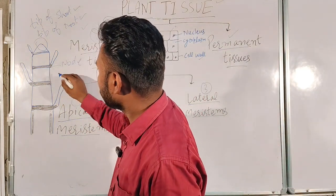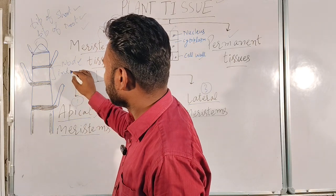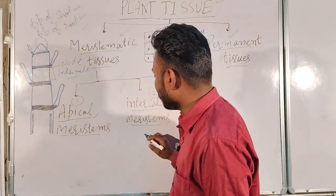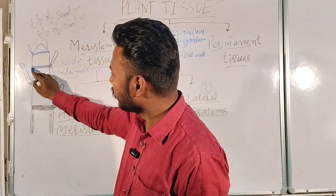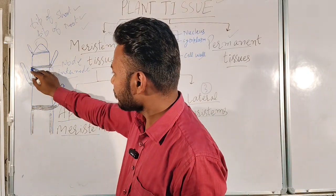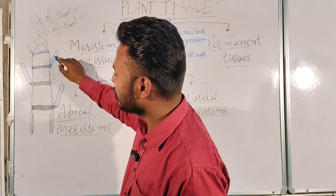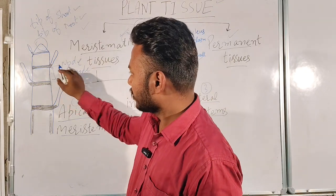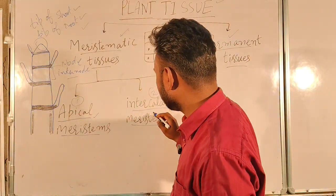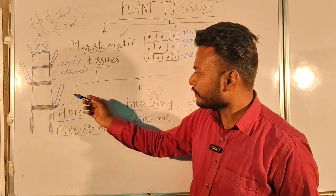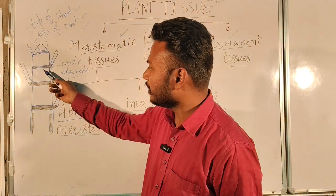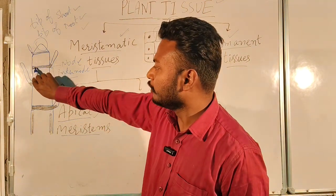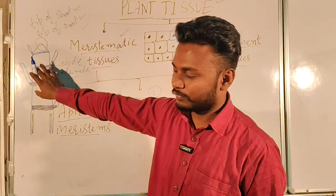The second type is intercalary meristem. You can see this region is the node and this region is the internode. Intercalary meristem is found at the node, where the leaf arises from the stem. The main function of intercalary meristem is to promote support and growth of the node as well as the internode of the stem.